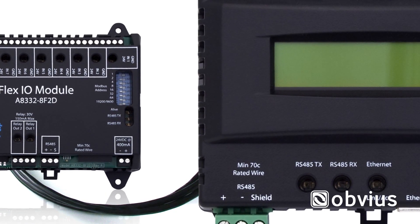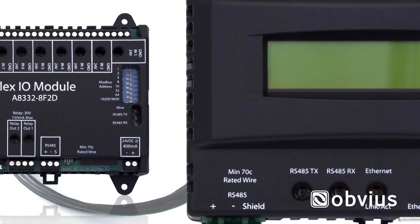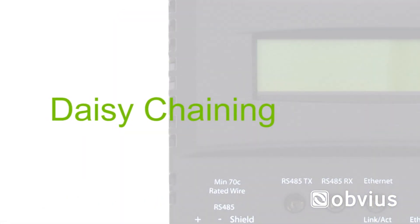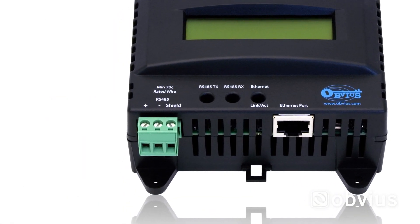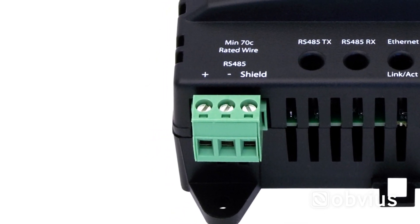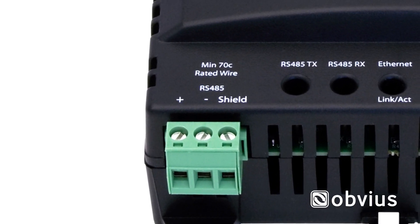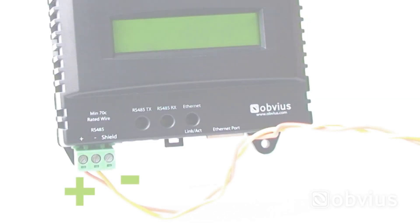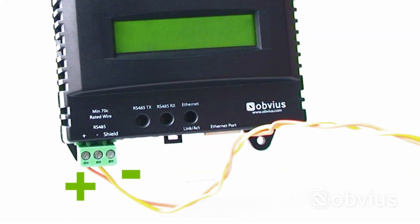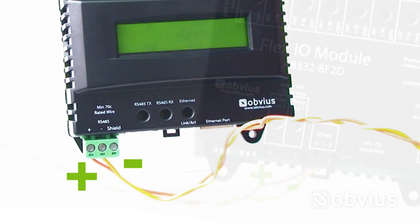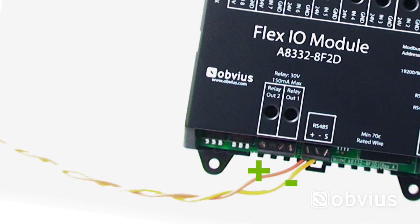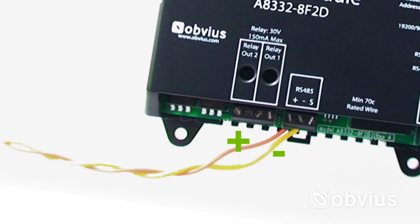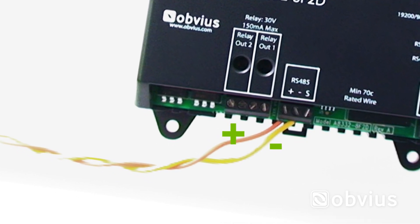Once each device has been provided a unique Modbus Address, users can begin connecting them to the AquaSuite using a technique known as Daisy Chaining. Begin by identifying the Modbus RS-485 terminal on the data acquisition server, consisting of positive, negative, and shield terminals. The most important factor when Daisy Chaining is to maintain polarity, meaning that the positive line is only connected to other positive terminals of the devices until connected to the DAS. Repeat this technique for both negative and shield terminals.